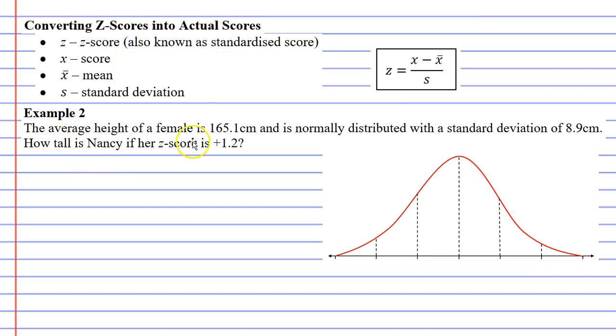It says here the average height of a female is 165.1 cm and is normally distributed with a standard deviation of 8.9 cm. How tall is Nancy if her z-score is positive 1.2?